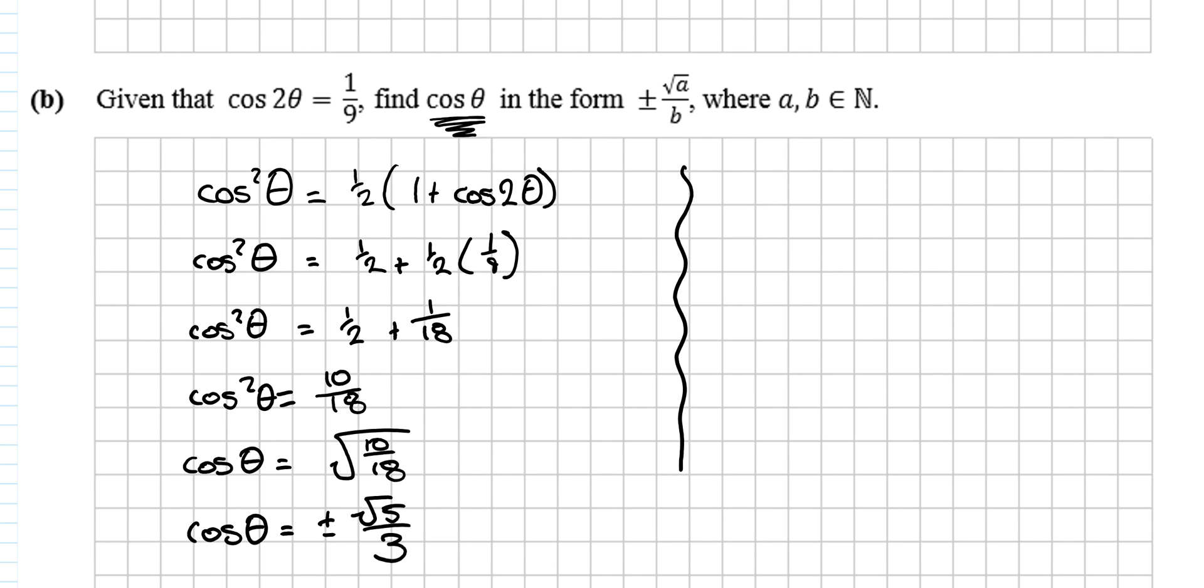The reason there's a plus or minus there is because all square roots have two answers, the plus version and the minus version. When we introduce, this is quite an important point, when you introduce a square root, like I have coming from here to here, you take the plus and minus version. If the question originally had a square root in it, then you wouldn't take the plus or minus version.